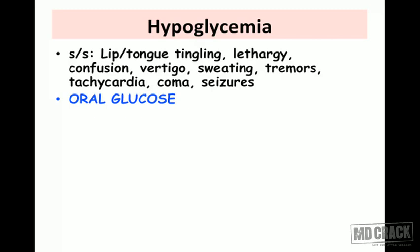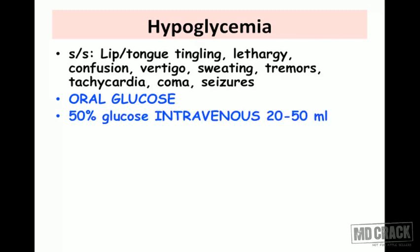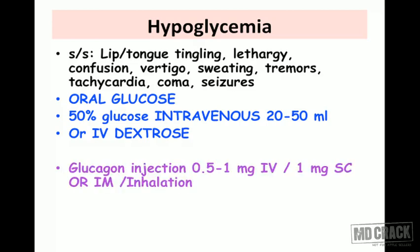The management of insulin hypoglycemia: if the patient is conscious, the first step is oral glucose. If oral glucose doesn't work, glucose must be given intravenously — 50% glucose solution, 20 to 50 ml by intravenous route, or intravenous dextrose. If the patient responds, hypoglycemia is corrected.